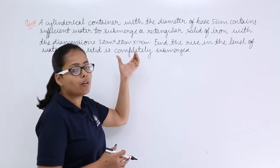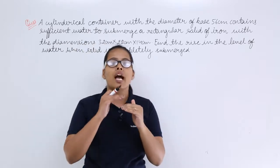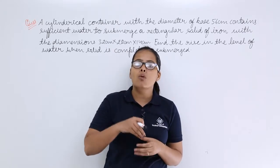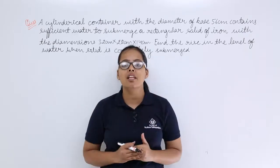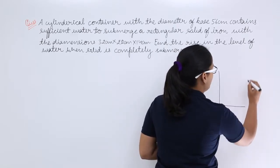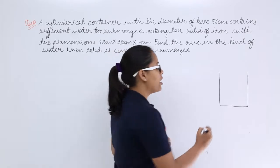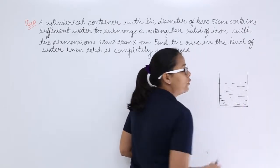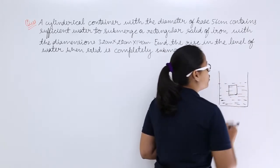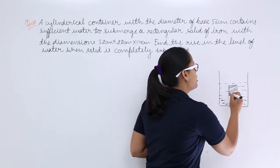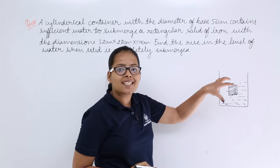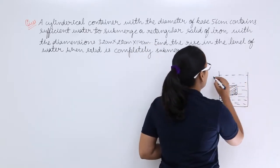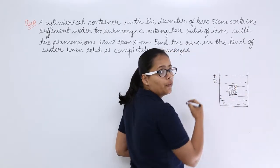When you put this rectangular solid — a cuboid — into the container, you need to calculate the rise in water. Whenever you put a cuboid in water, the volume it occupies will be replaced and will come in the form of a rise in the water level. Think of a beaker, which is nothing but a cylinder filled with some sufficient amount of water. When you submerge a cuboid in it, it occupies some volume, and the water level rise will be equal to the volume of that cuboid.